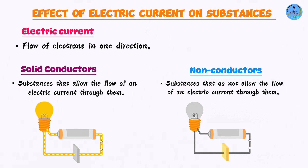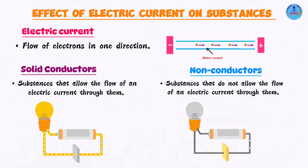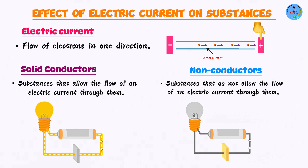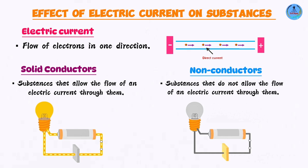What happens in this setup is that when the circuit is complete, you're going to have electrons moving. The electrons are going to move from the negative terminal towards the positive terminal. This is what we mean by saying that the electrons are moving in one direction. As the electrons flow through the circuit, they create heat energy.